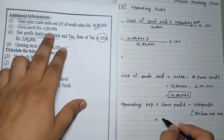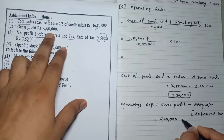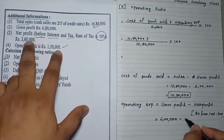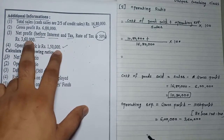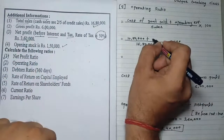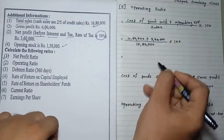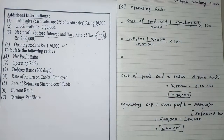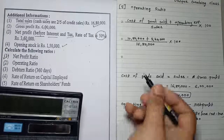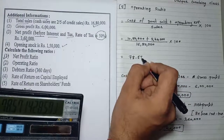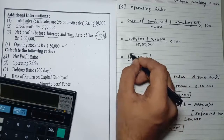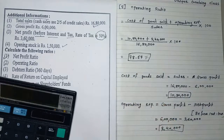Gross profit is 6,00,000 minus net profit before interest and tax which is 3,60,000, giving operating expense = 2,40,000. Now applying the operating ratio formula: (10,80,000 + 2,40,000) divided by 16,18,000 multiplied by 100 = 78.57%. The answer is in percentage.